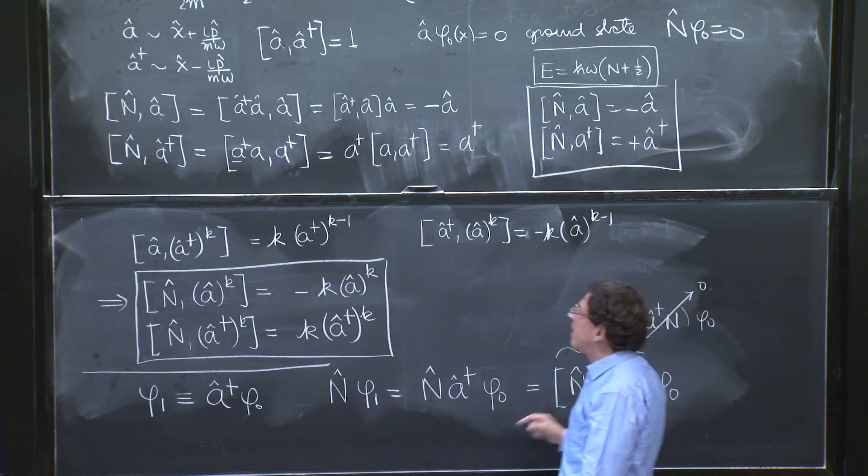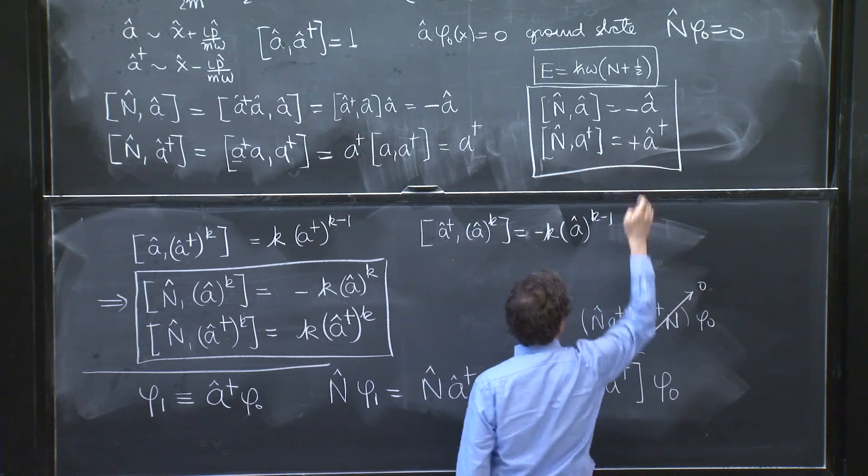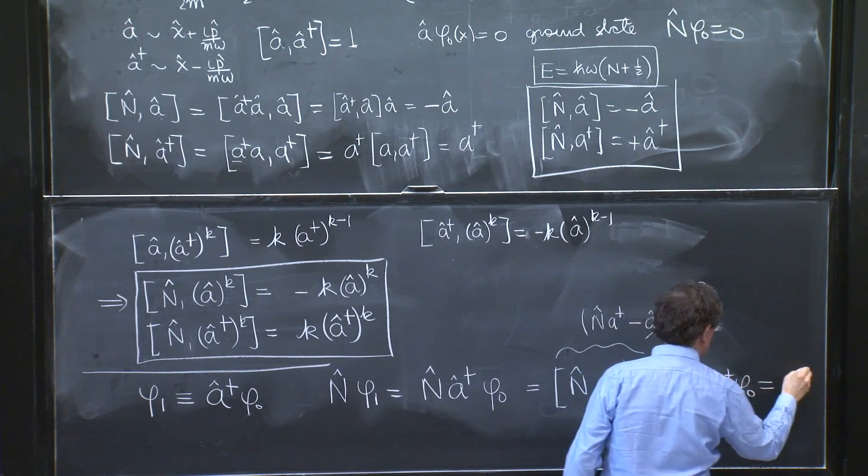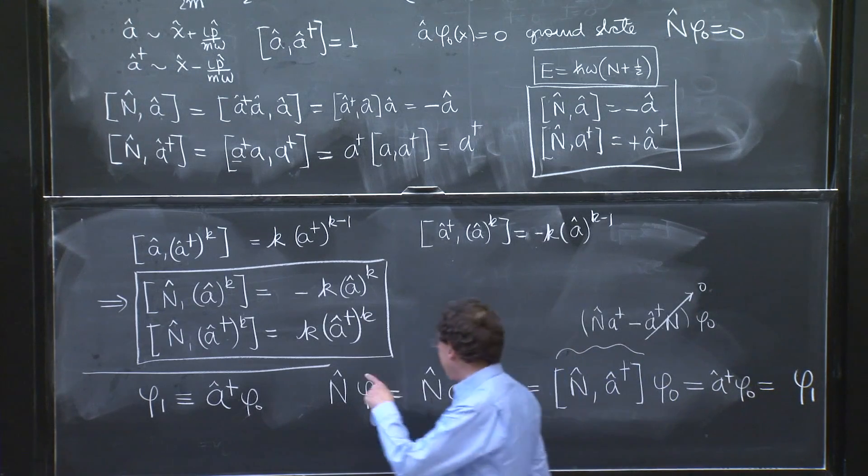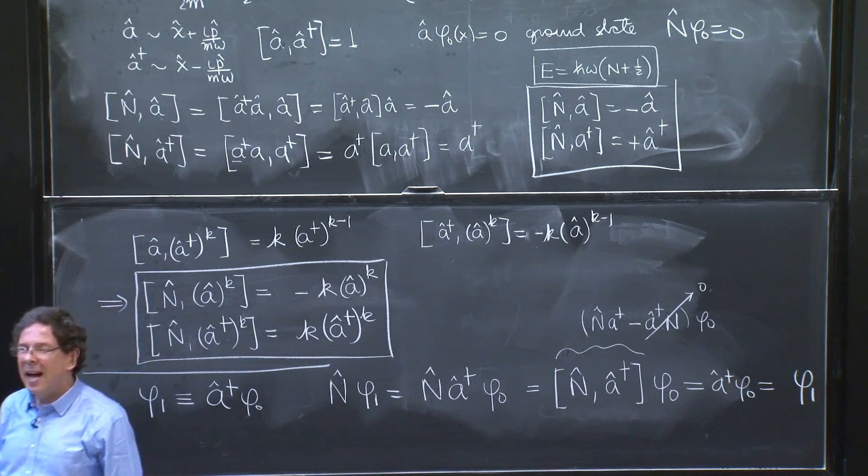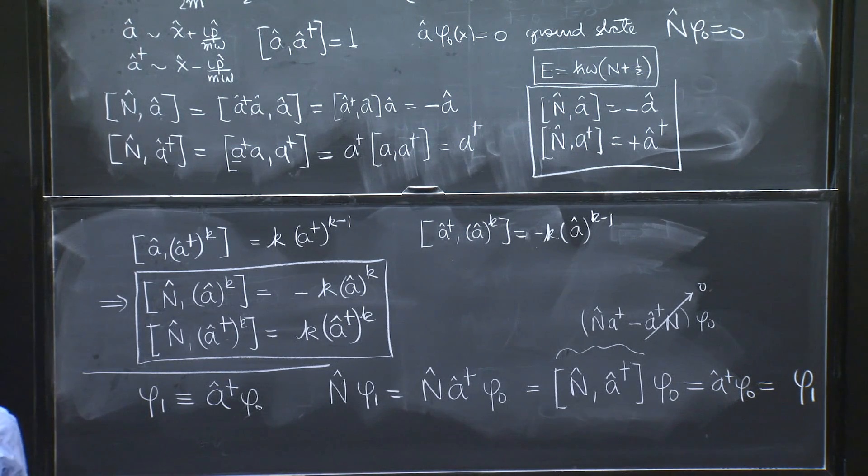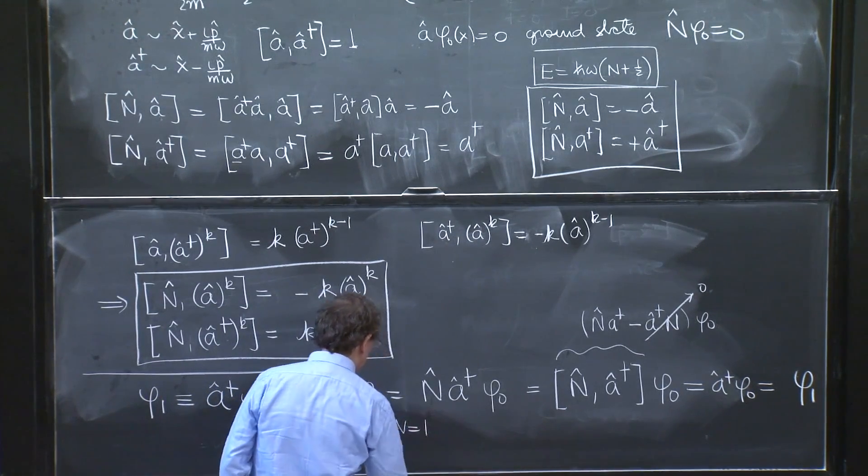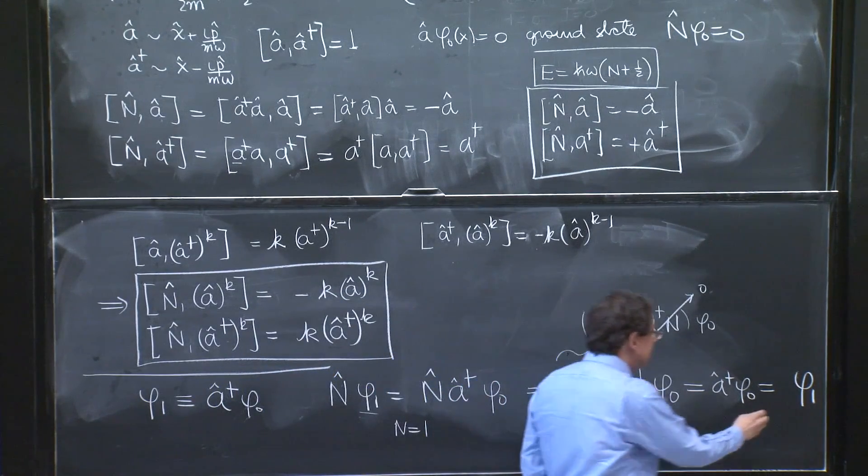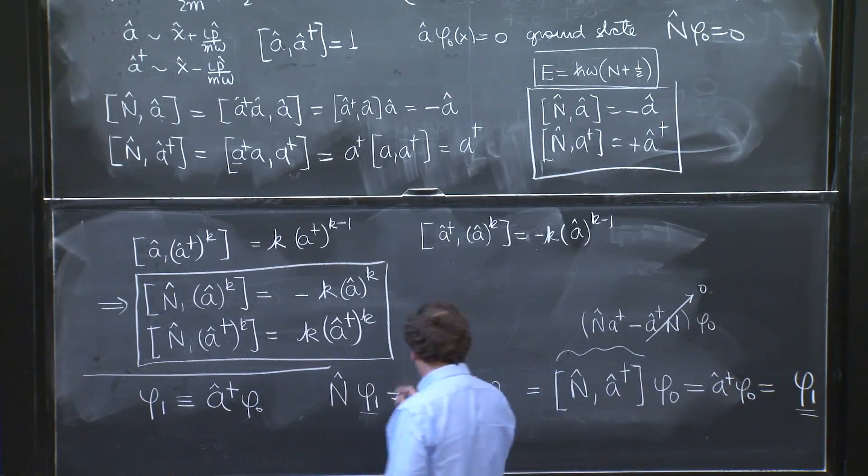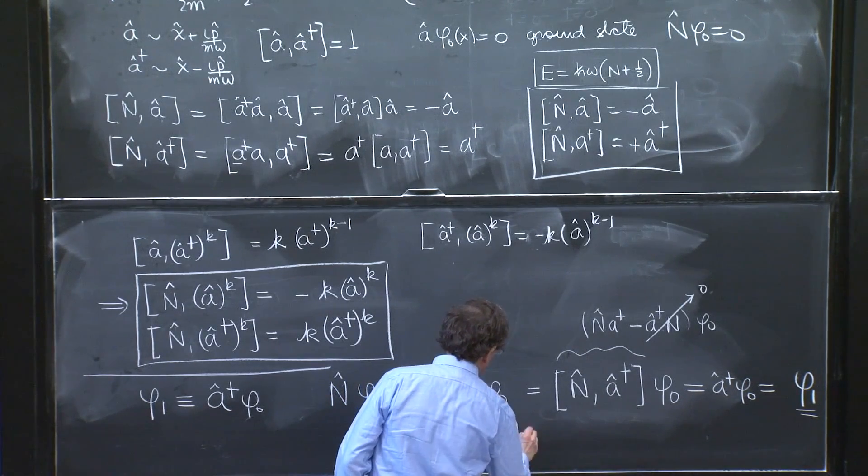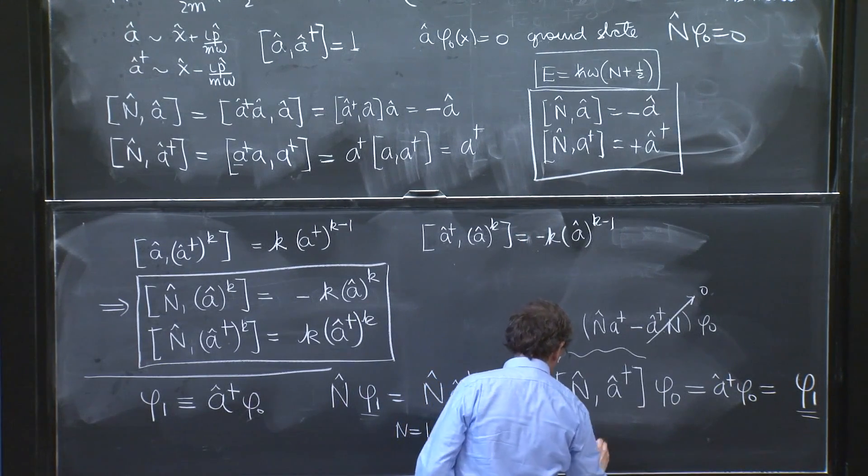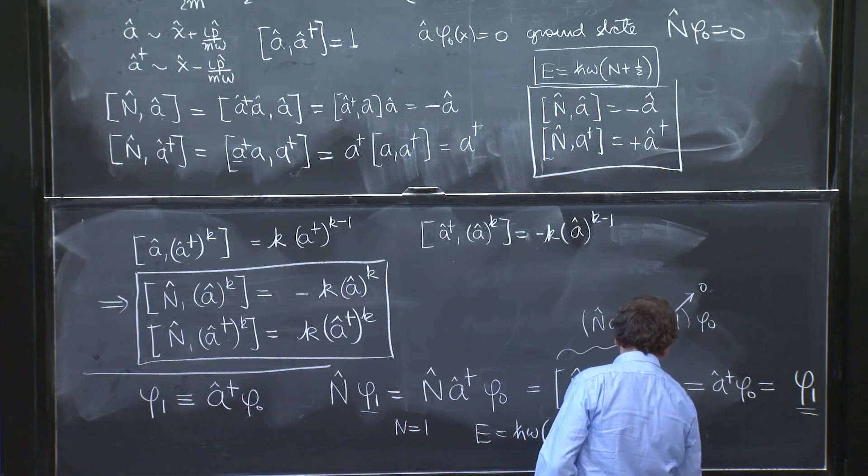And now this commutator is already known. That's why we computed it. It's just a dagger. So this is a dagger phi_0. And that's what we call phi_1. So n hat on phi_1 is phi_1. n hat has eigenvalue 1 on phi_1. So n equals 1. That's the eigenvalue. It is an eigenstate. It is an energy eigenstate. In fact, how much energy E is h bar omega times n, which is 1, plus 1 half, which is 3 halves h bar omega.